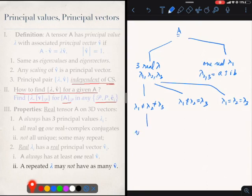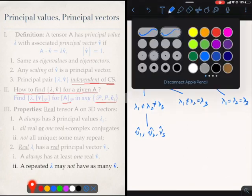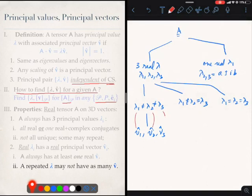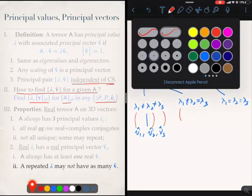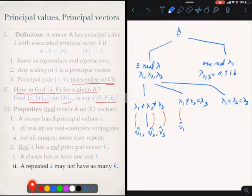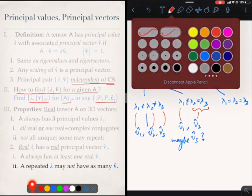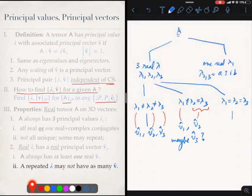In the case of three distinct real values, you will get three principal vectors v1, v2, v3 corresponding to lambda 1, lambda 2, lambda 3. When lambda 2 and lambda 3 are the same, lambda 1 will give me v1, and at least I will be given v2, but will I get a v3? That is not clear. I may or I may not. Over here with all repeated, I am guaranteed v1, but v2, v3, not sure.